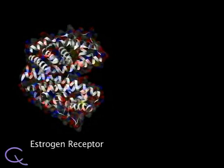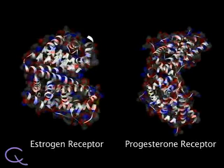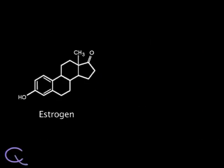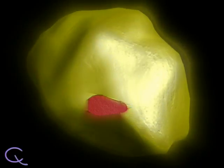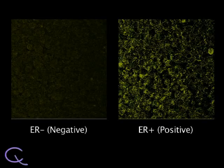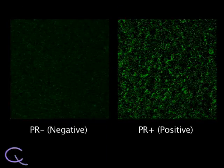Estrogen and progesterone are female hormones, and some breast cancers grow faster in the presence of one or both of these hormones, while others are not affected. The estrogen receptor (ER) and the progesterone receptor (PR) are proteins that bind the female sex hormones estrogen and progesterone. These hormones, produced by the ovaries, bind to their respective receptors and stimulate the production of proteins that increase cell division. Breast tumor cells with a positive hormone receptor status may be further characterized by how much ER and PR is present.